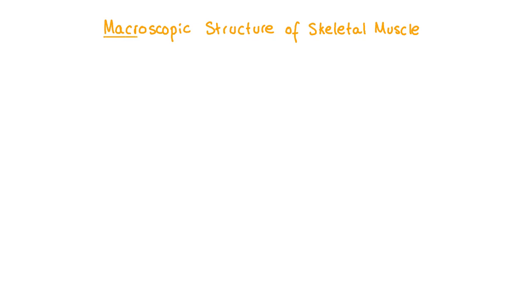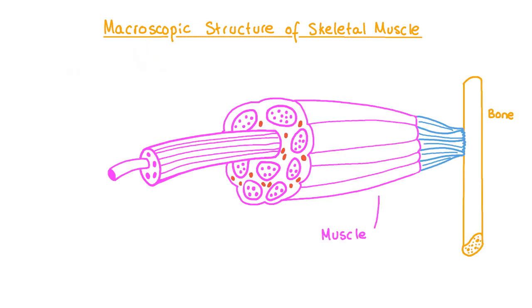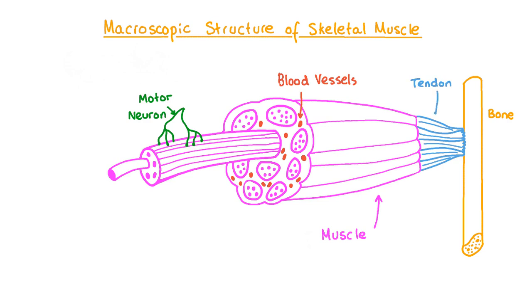Let's take a closer look at the macroscopic structure of skeletal muscle and how all of its different components function. The word macroscopic refers to structures which are visible to the naked eye without the need to use a microscope. Each muscle is considered an individual organ and each of these muscles contains different tissues such as the skeletal muscle tissue itself, nervous tissue mostly consisting of motor neurons, blood tissues, and connective tissues like tendons which attach the muscle to bones.